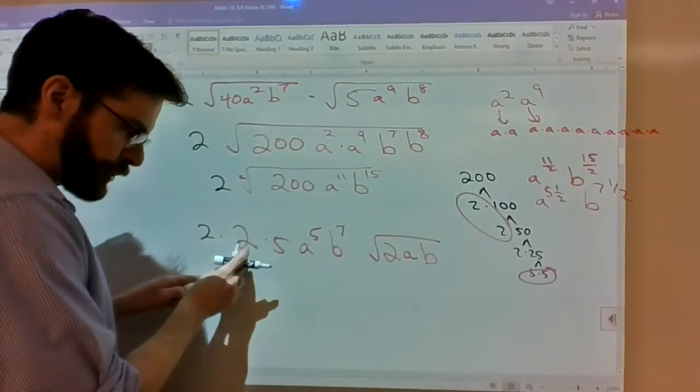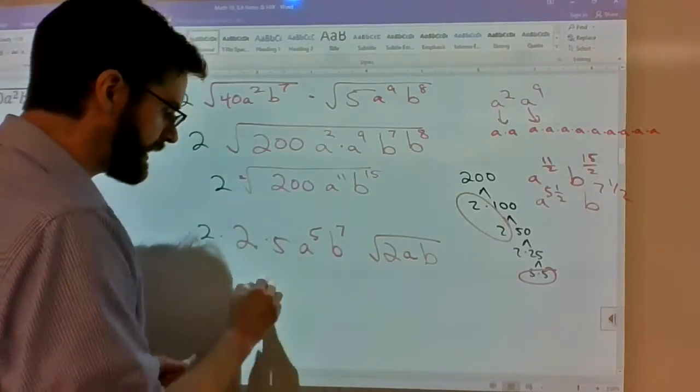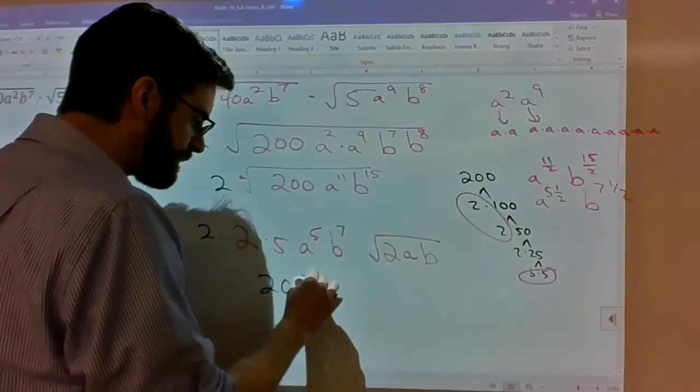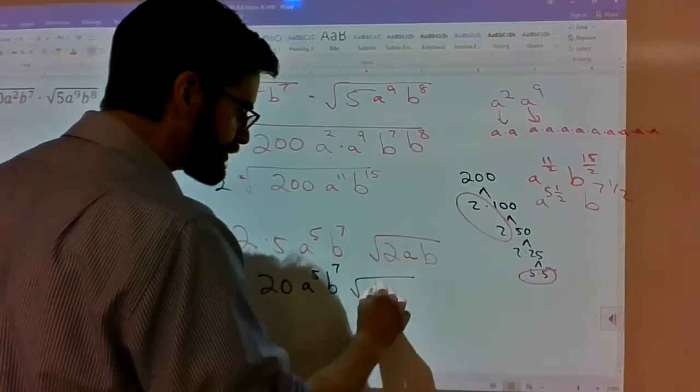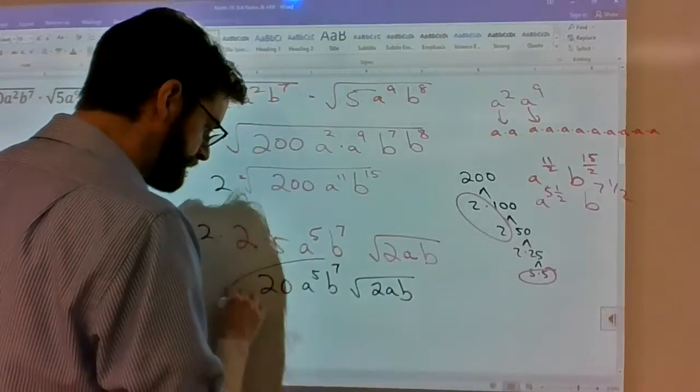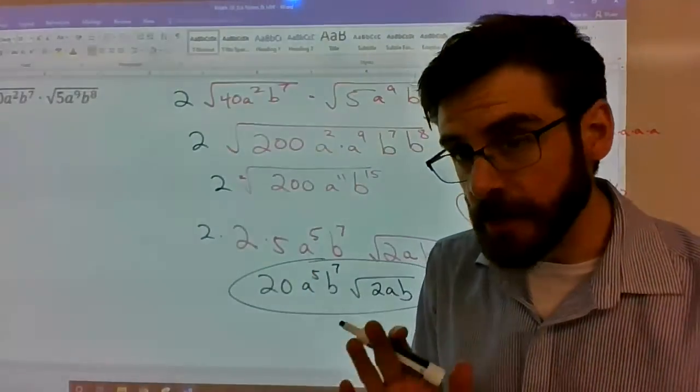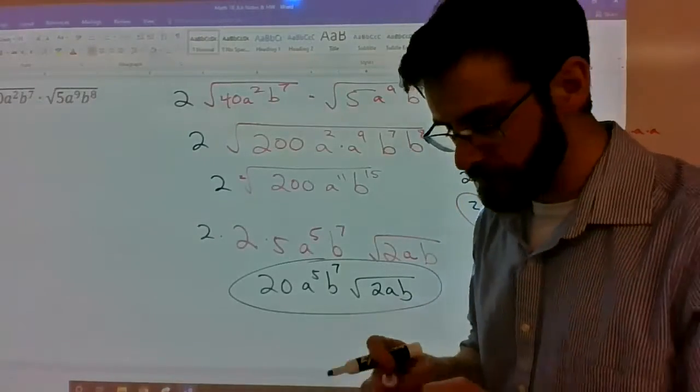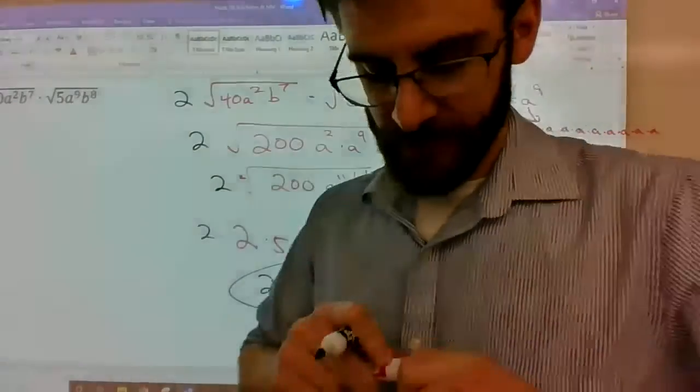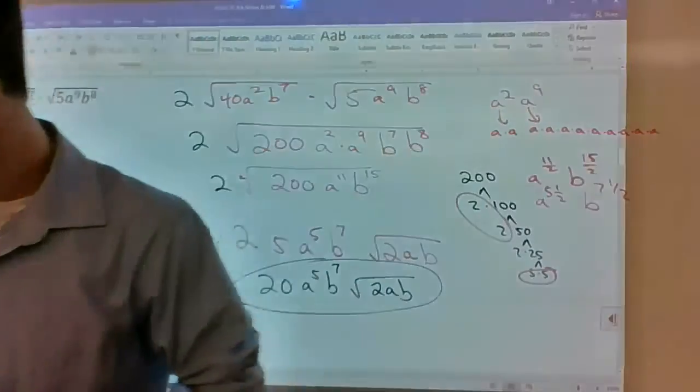Then just take 2 times 2, which is 4, times 5, which is 20. So it's 20 a to the 5, b to the 7, root 2ab. And again, I'm ignoring the absolute value. Those of you who are not in my math 1b class, I'm ignoring it for now. I have reasons, trust me. Alright, last one, number 5.